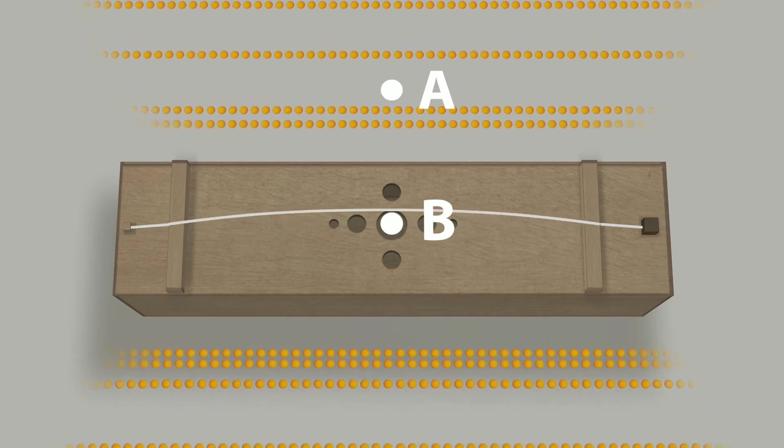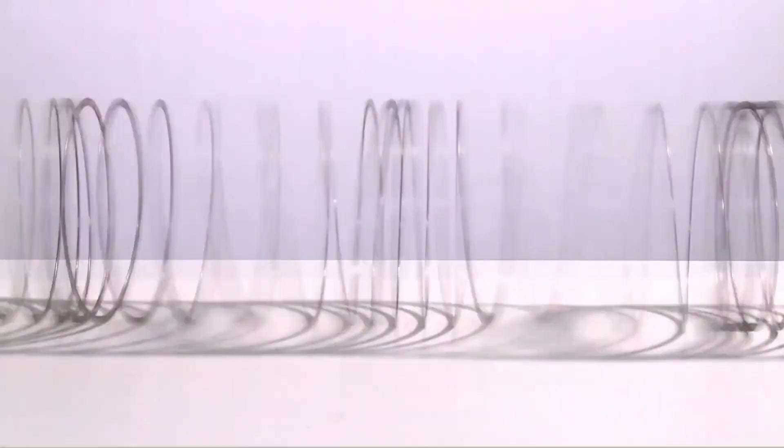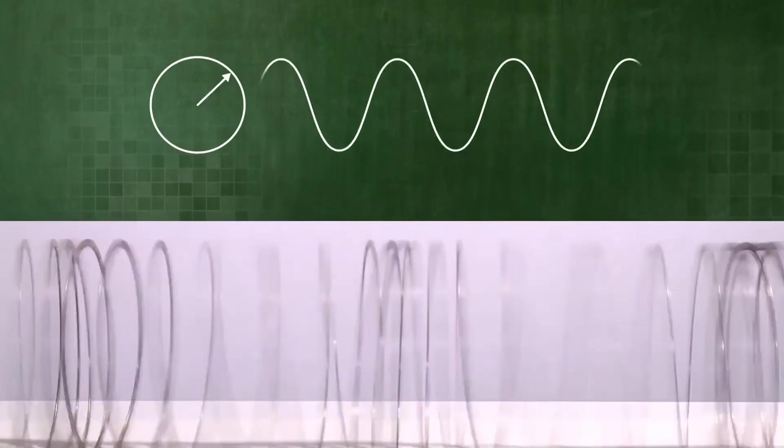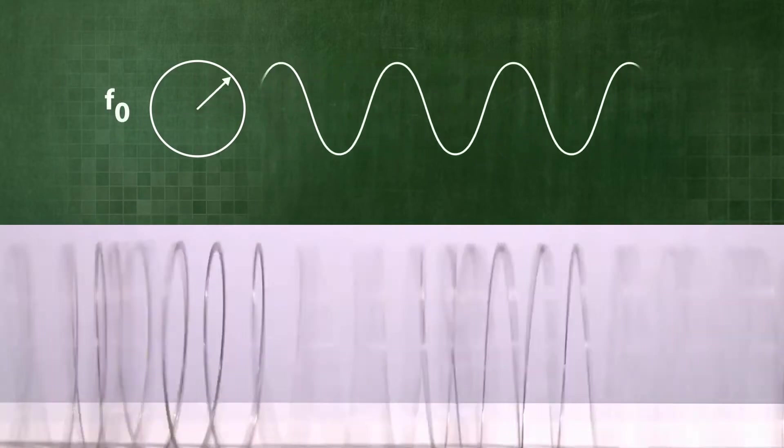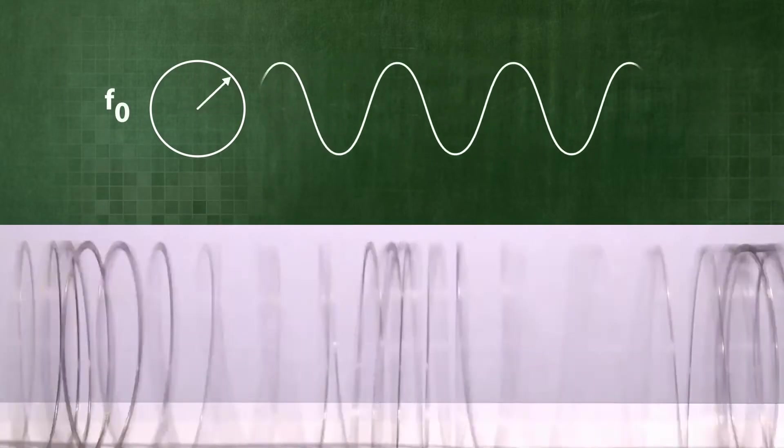In the air, there is a sound wave that is propagating. The fundamental tone has the frequency F0, which corresponds to a wheel with a rotation frequency F0.